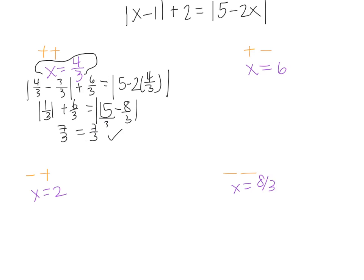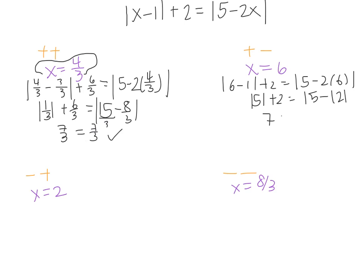Checking x equals 6: I plug it in to get the absolute value of 6 minus 1 plus 2, equal to the absolute value of 5 minus 2 times 6. 6 minus 1 is 5, plus 2 is 7. On the right-hand side I have the absolute value of 5 minus 12, which is the absolute value of negative 7, and that equals positive 7. So those two are indeed equal, which tells us x equals 6 is also an answer.